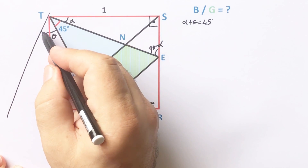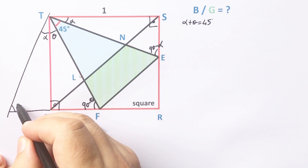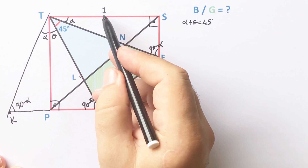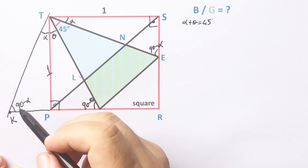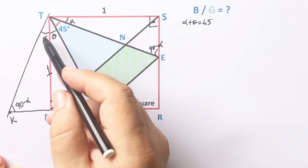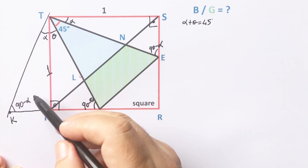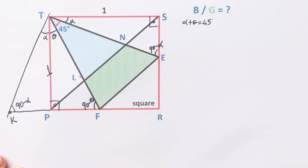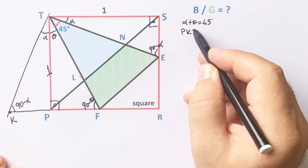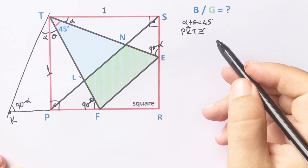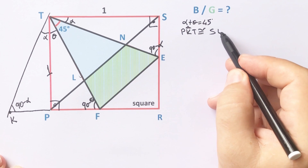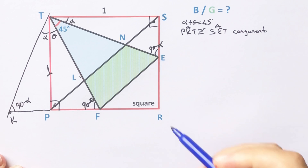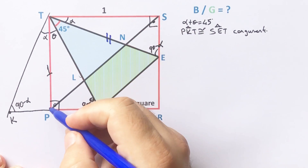If we mark here alpha degrees and connect here, this angle must be 90 minus alpha. Let's call this point K. If here is one unit, this length is also one unit. This triangle and this triangle have the same angles and same length, which means these two triangles are congruent — triangle PKT and triangle SET are congruent. Therefore, the sides opposite the 90 degrees must be equal.